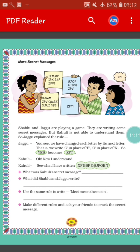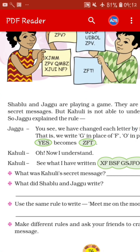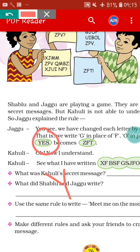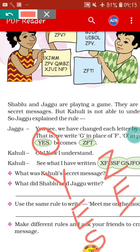Shablu and Jaggu are playing a game, writing secret messages that Kahuli cannot understand. Jaggu explains the rule: they changed each letter by its next letter. So G is written in place of F, O in place of N. For the word 'yes' — Y, E, S — they have written Z, F, T. Because after Y comes Z, so in place of Y they wrote Z. In place of E they wrote F, and in place of S they wrote T. They used the next alphabet for each letter.